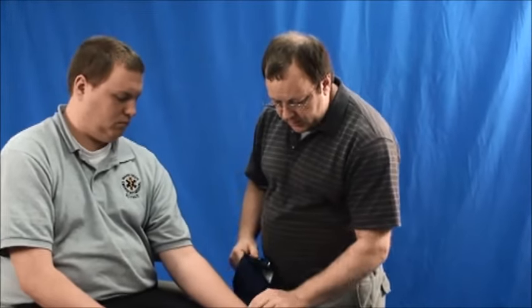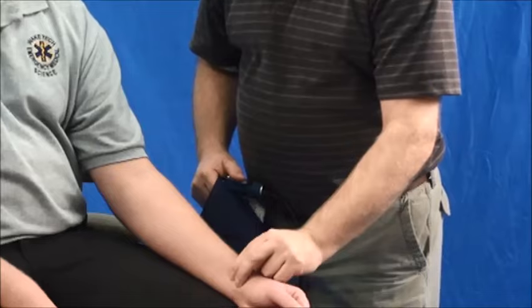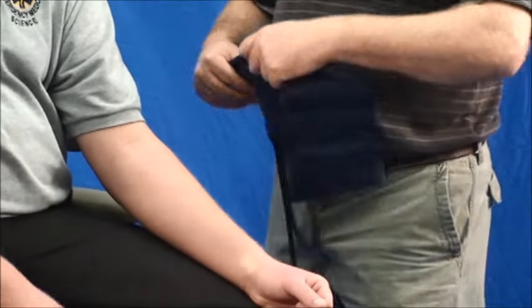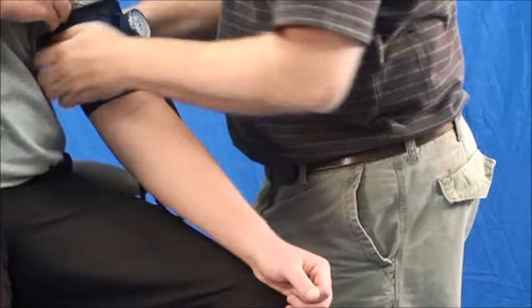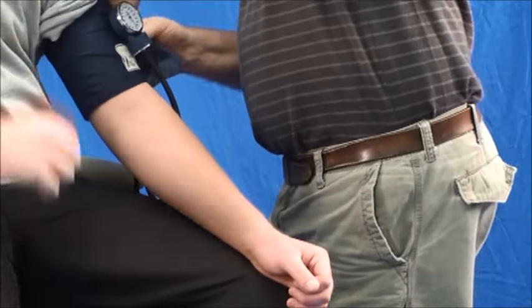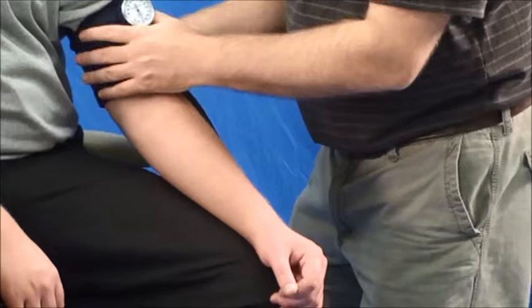First, locate the radial pulse. Make sure your patient is in a comfortable seated position. Expose the arm. Place this blood pressure cuff again over the brachial artery.